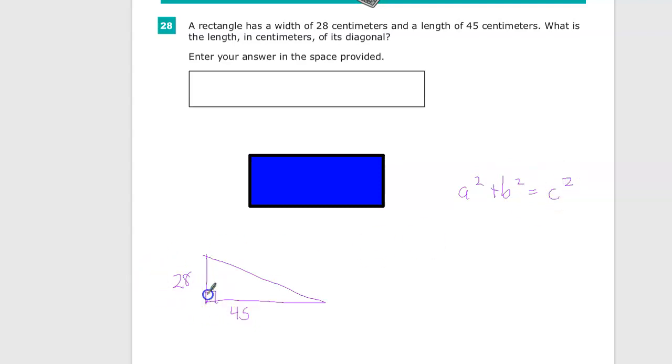The right angle is created by the sides A and B. So this is A and this is B, or this is A and this is B. It doesn't actually matter. So I will put in 28 there, and for B, 45.